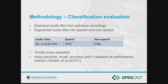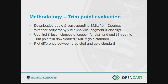To evaluate the classification model, we did the following. We downloaded audio from previous recordings from Opencast, segmented these audio files into the two classes — speech and non-speech. The table here shows you the number of audio files we ended up with: almost 7,000 files, of which 3,476 were speech and 3,386 were non-speech. We then did a tenfold cross-validation, and we used the following metrics to evaluate the classification model: precision, recall, accuracy, and F-measure.